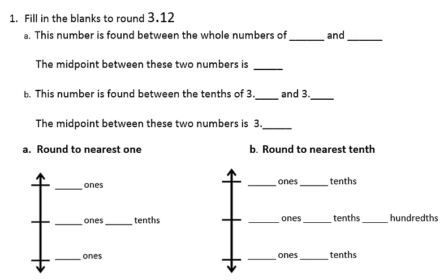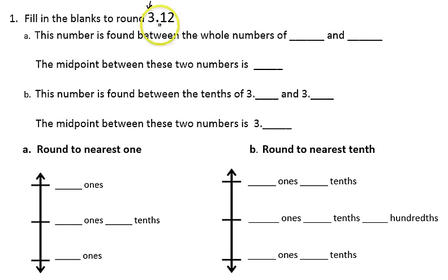The directions say to fill in the blanks to round this number: 3 and 12 hundredths. First of all, this number is found between which two whole numbers. By whole numbers, we're looking at the numbers in the ones place. So 3 and 12 hundredths would be found between the whole numbers of 3 and 4.